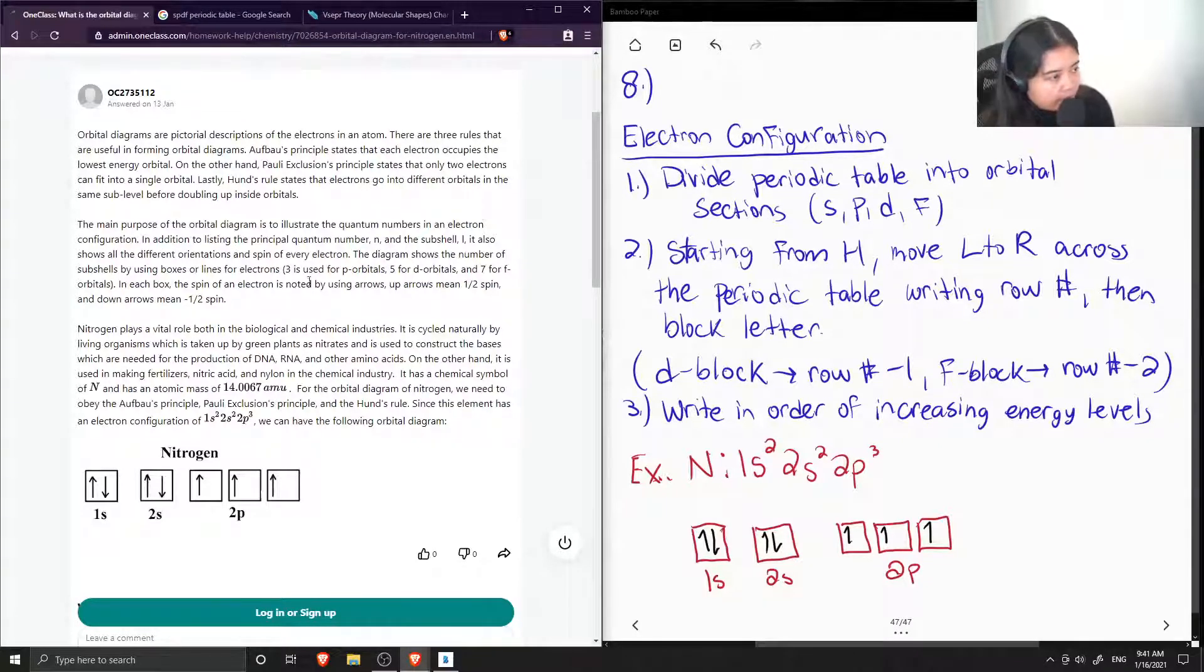This diagram shows the number of subshells by using boxes or lines for electrons. So 3 is used for p, 5 is used for d, and 7 for f. In each box, the spin of an electron is noted by using arrows. Up arrows mean half spin, and down arrows mean negative half spin.